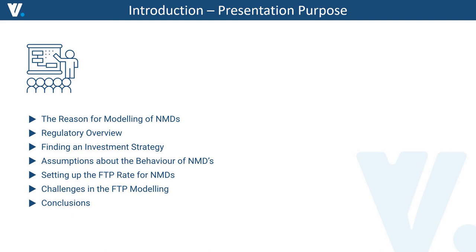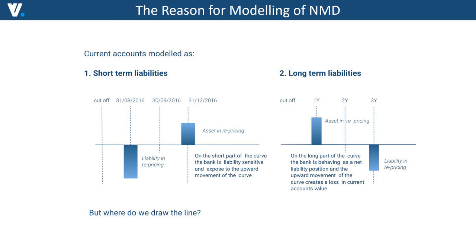A non-maturity deposit is a product which does not have any contractual maturity allocated. It can be a savings account, a checking account, or a current account — you have different categories of this product, and every category has its own characteristics which cannot be underestimated during the modeling process, because those client cohorts and segments have different behavior.